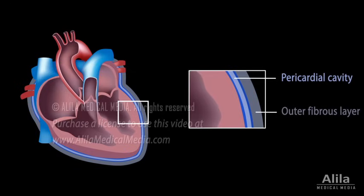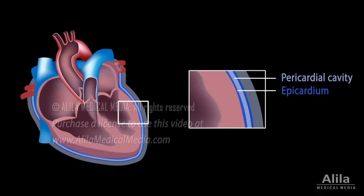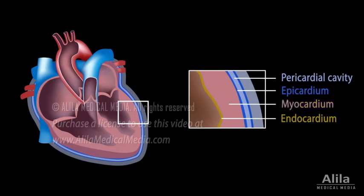The heart wall has three layers. The outer layer, epicardium, lines the pericardial cavity. The inner layer, endocardium, lines heart chambers and valves and is continuous with the endothelium of blood vessels. And the thick middle layer, myocardium, is the muscle tissue responsible for the beating of the heart.